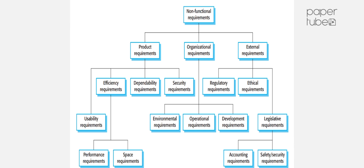Product requirements include speed, size, ease of use, reliability, robustness, and portability. Organizational requirements cover environment requirements, operational requirements, and development requirements — relating to the environment or development stage in which the organization operates.